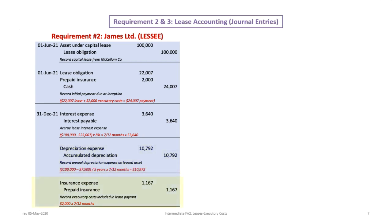Finally, in that same period we have to deal with the insurance — the executory costs. We debit insurance expense and credit prepaid insurance for $1,167, which is the $2,000 that's buried in the payment and prorated over 7/12 months.